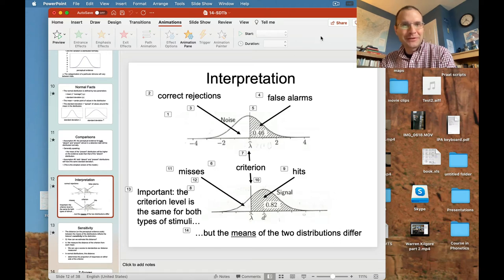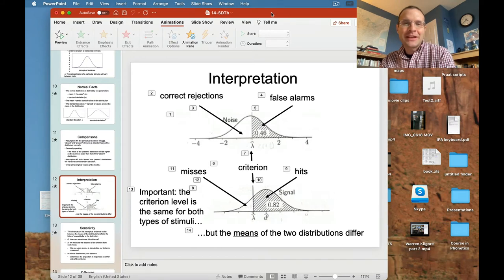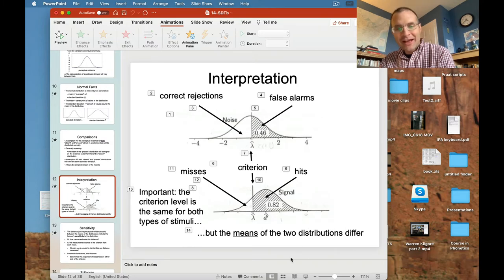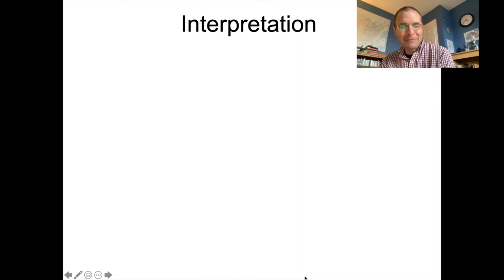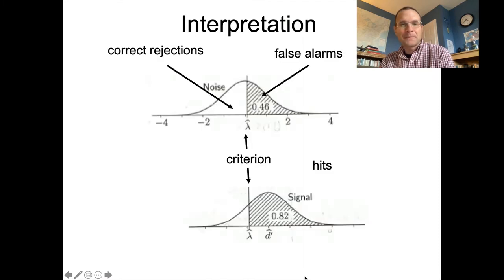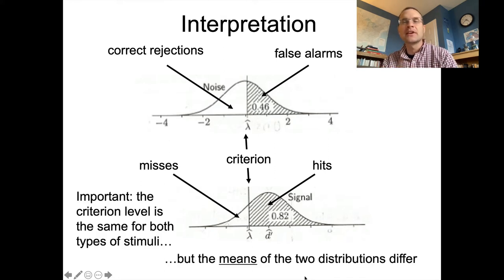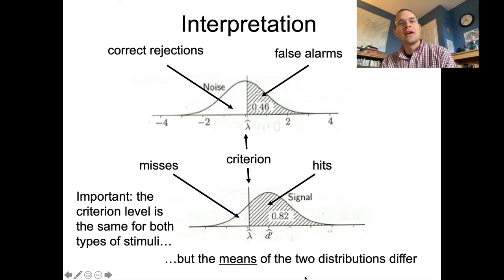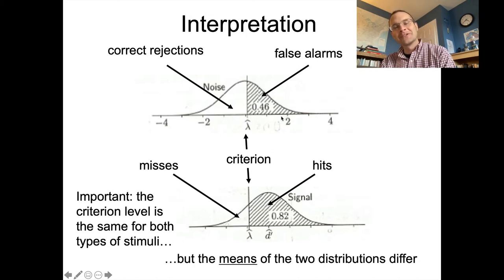Hello everybody. We are back for part two of the lecture on signal detection theory. When we left off, we were looking at this slide — we had basically laid out our assumptions for what's going on behind the scenes in a detection experiment where you're trying to detect whether or not there's a signal in some noise being played to you. Sometimes there's just noise, sometimes there's actually a signal there. When you hear a signal, there's more evidence that there's a signal than when there is just noise.